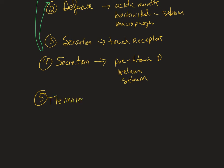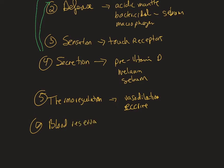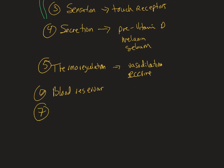Thermoregulation is an important function involving vasodilation and the eccrine sweat glands. The skin can also act as a blood reservoir, allowing the body to distribute or shunt blood from the skin to muscles and organs when needed. Finally, excretion: small amounts of nitrogenous waste are secreted via sweat, along with water and salt.